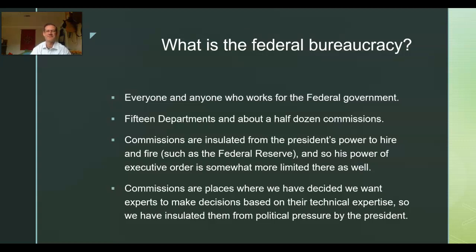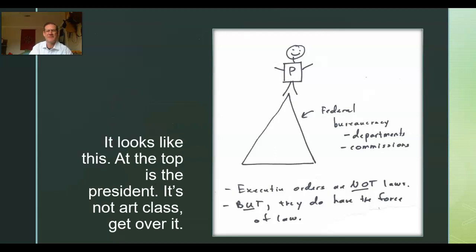The Federal Reserve is supposed to make decisions based on their knowledge of economics — should we raise or lower interest rates? There are about half a dozen or more commissions. Underneath the president is the federal bureaucracy. There are departments and commissions, and the president gets to tell people how to do their job. Executive orders are not laws, but they do have the force of law. If the president says 'do your job this way,' he has the legal right to do that, and you have to do your job that way.